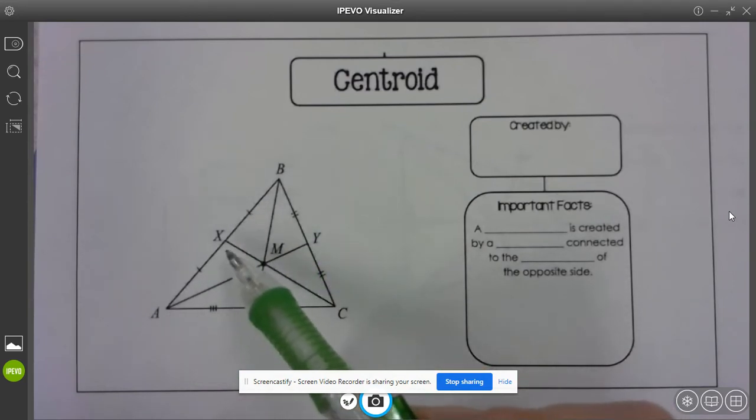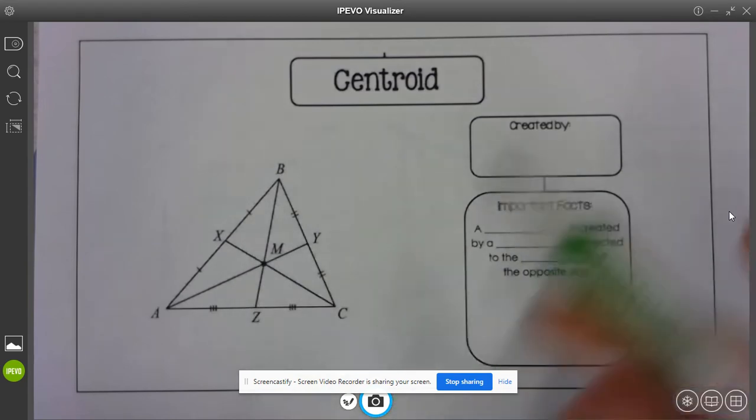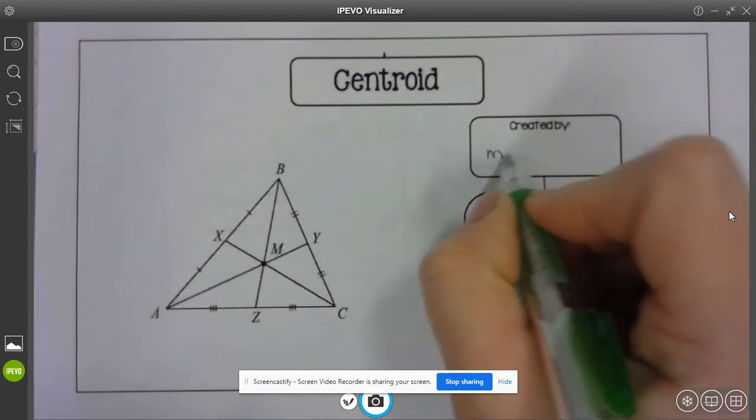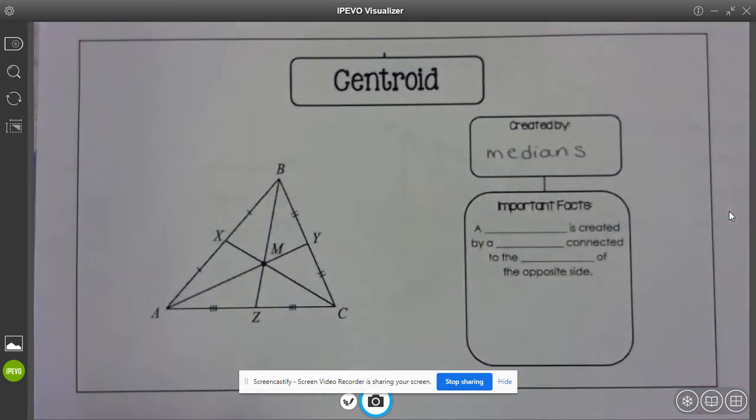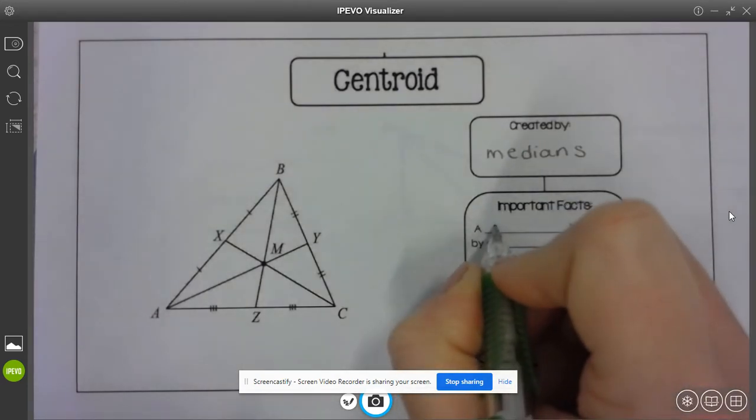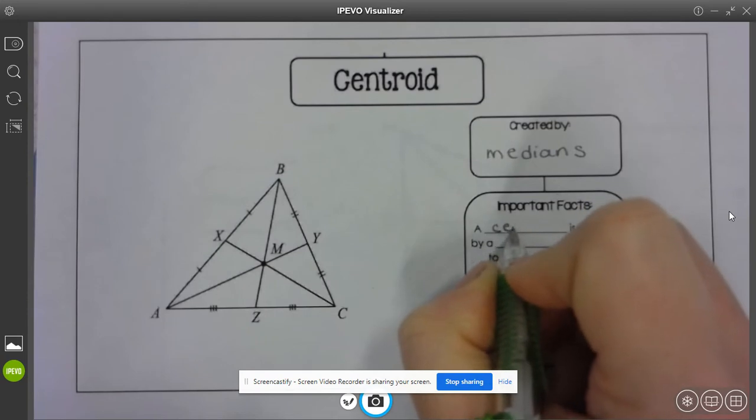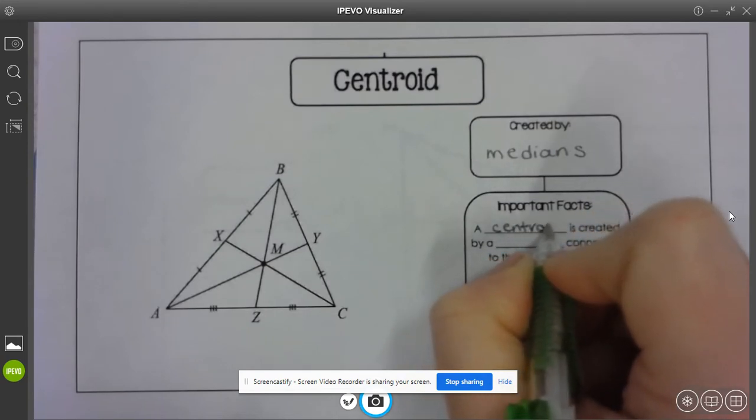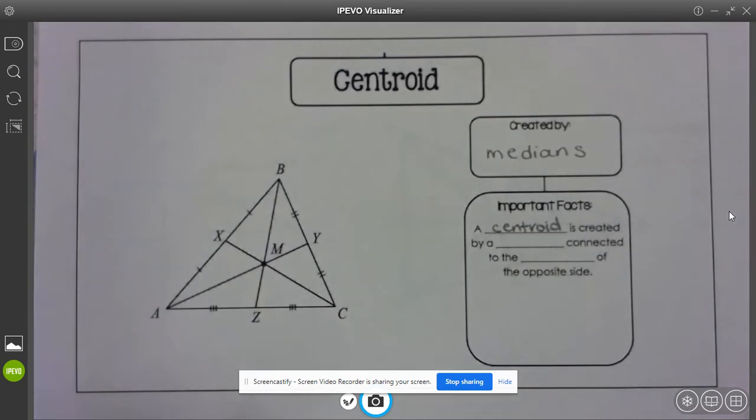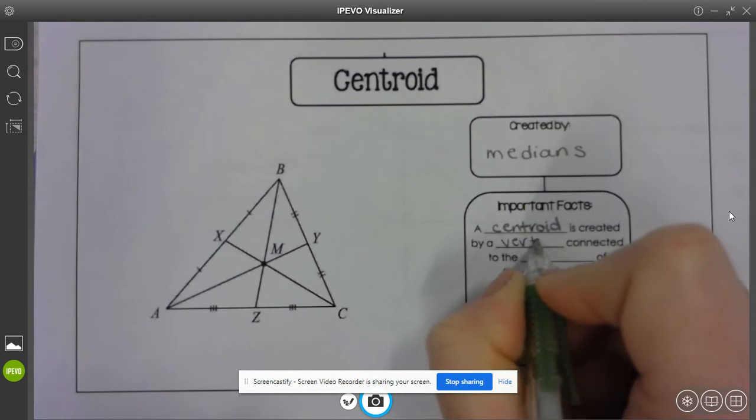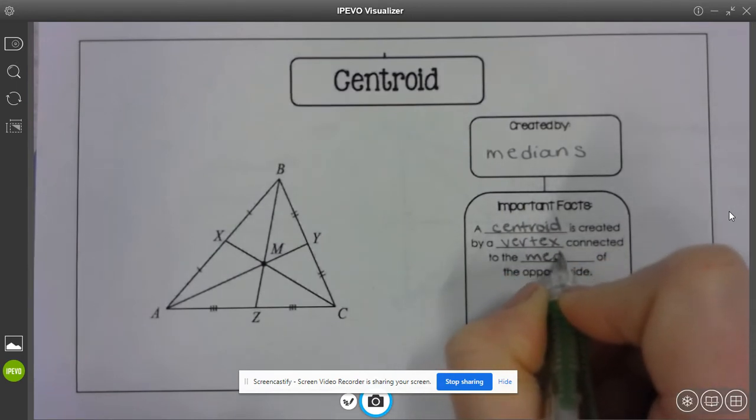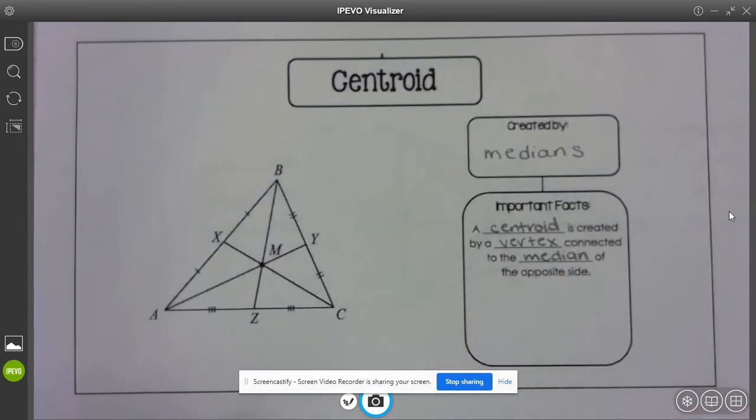So that tells me these are created by medians, because a median does not have to be perpendicular. So a centroid is created by a vertex connected to the median of the opposite side.